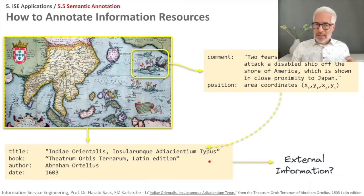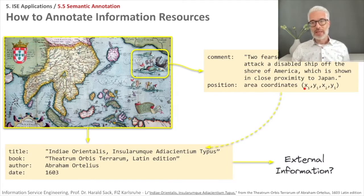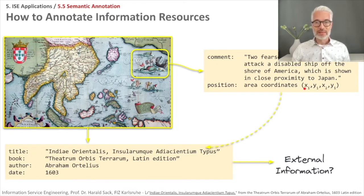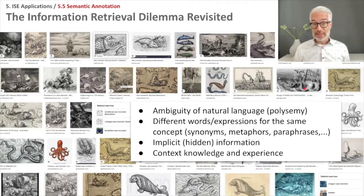Within the map you can put a comment about the two fearsome sea monsters, connected to specific area coordinates — given as two XY coordinate pairs, the upper-left and lower-right corner of a rectangle depicted here. This might be the content of our image annotation.